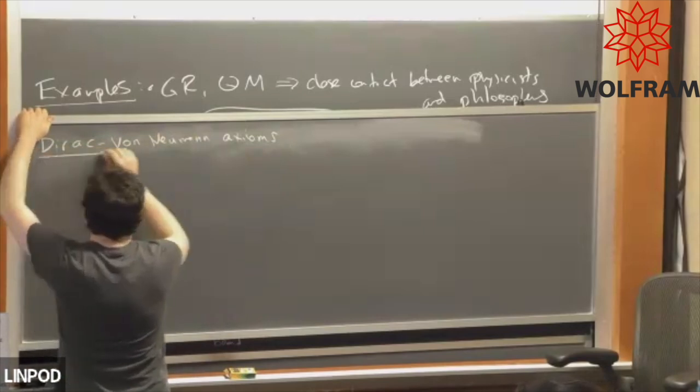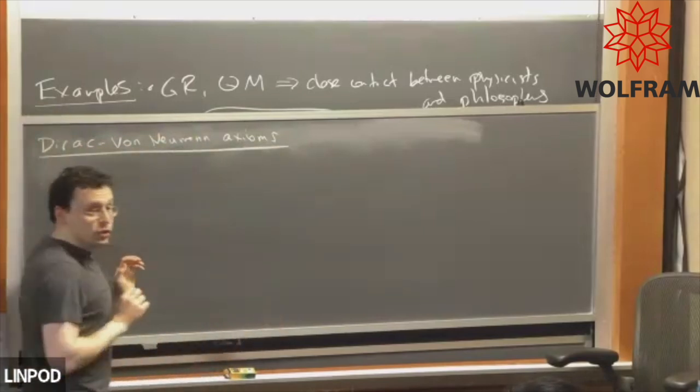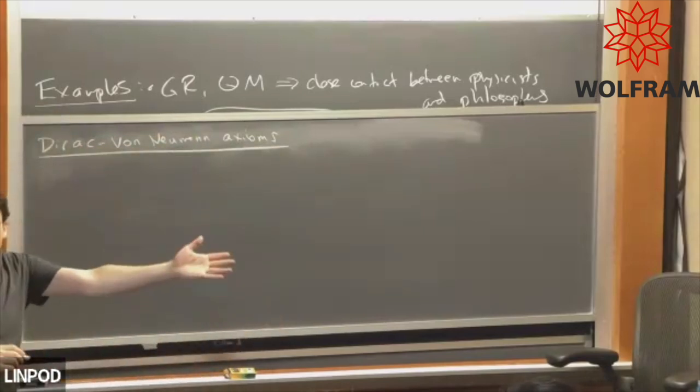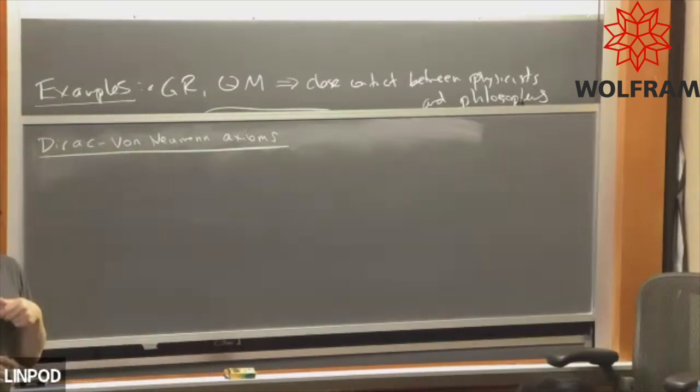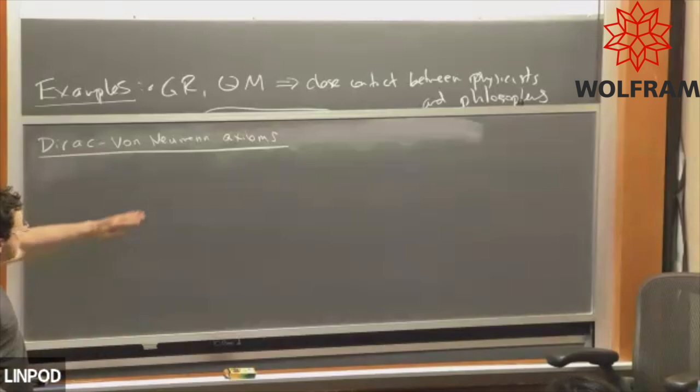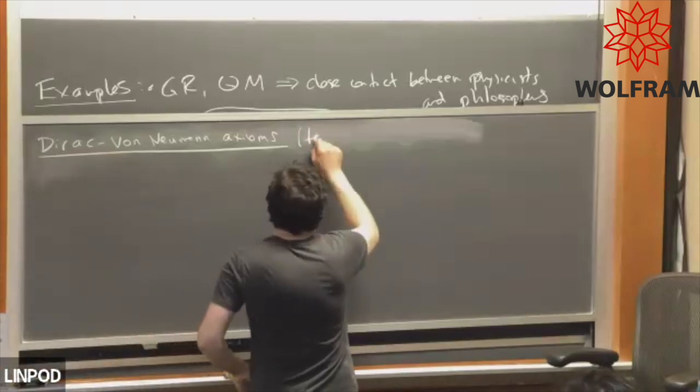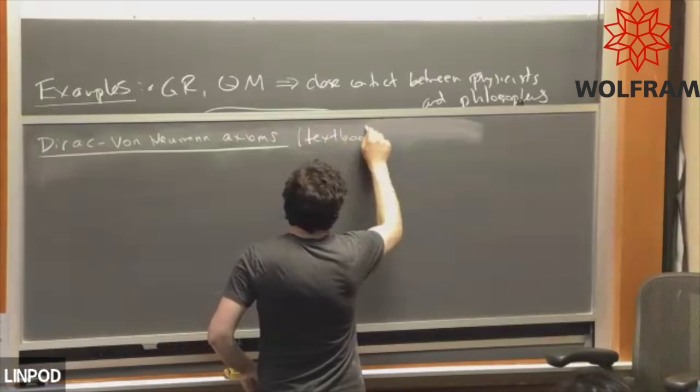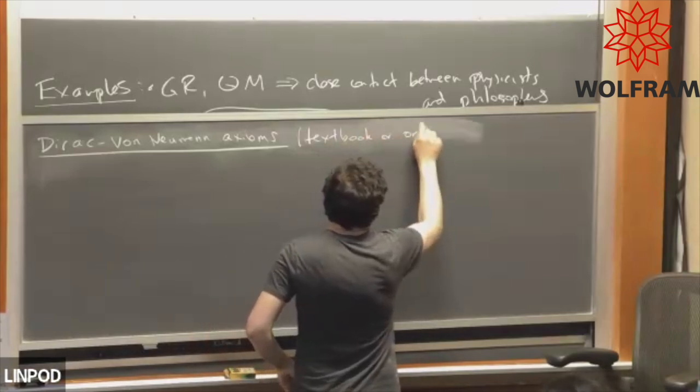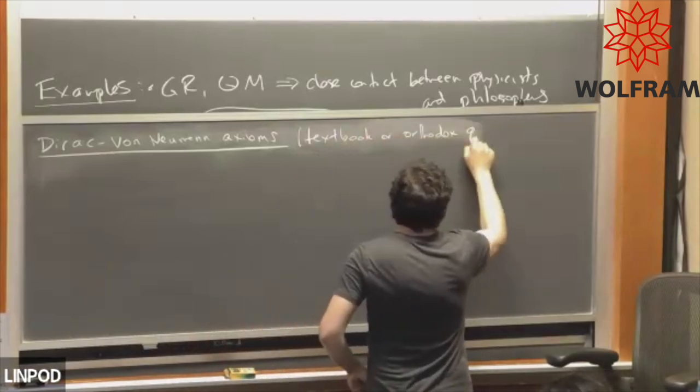You should think of these as the nearest approximation to Newton's laws, Newton's three laws of motion which axiomatize Newtonian mechanics, or the Maxwell equations or whatever it is you're using. These are the things that are supposed to play that role according to the textbooks. So this is going to be called textbook or orthodox quantum theory.